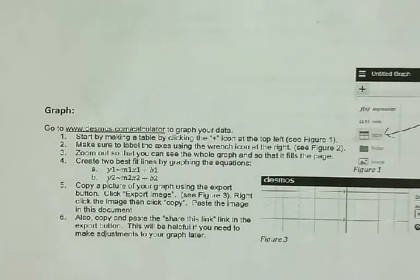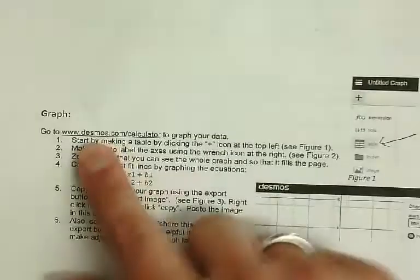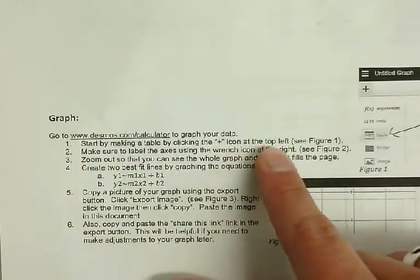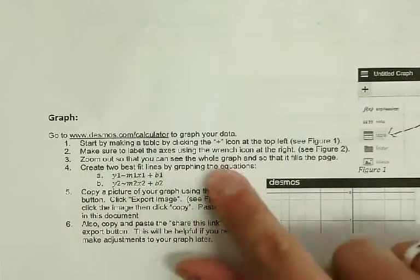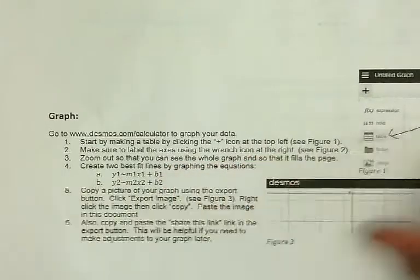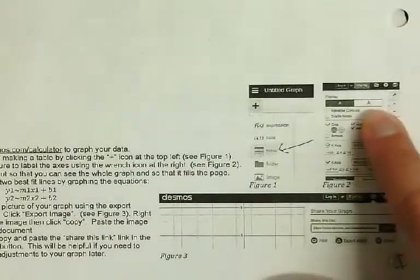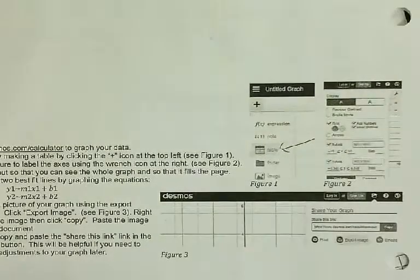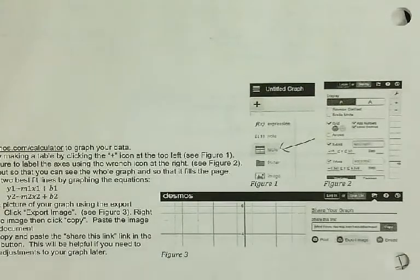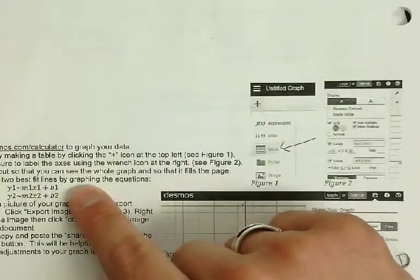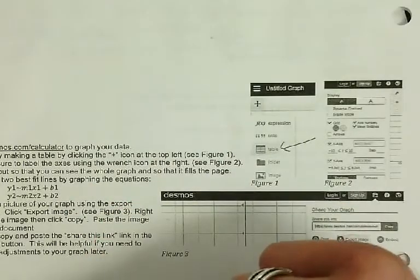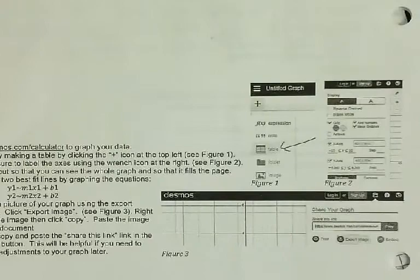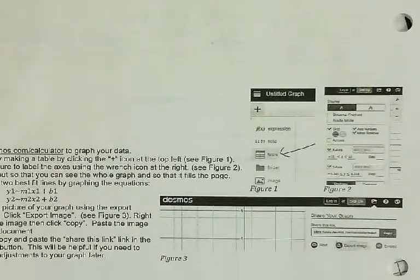It's going to give you a blank screen with stuff. Then what you're going to do is make sure to label the axes. Start by making a table by clicking the plus icon at the top left. Label the x-axis using the wrench icon at the right. Zoom out so you can see the whole graph and so it fits the page. Create two best fit lines using the equations, copy a picture, and then copy and paste the link as well. Let's just fix the first three.